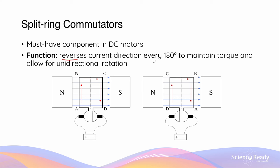This occurs every half a revolution — that is, every 180 degrees. We want to reverse the current direction every half a turn because we want to maintain the torque, and this allows for unidirectional and continuous rotation of the armature.